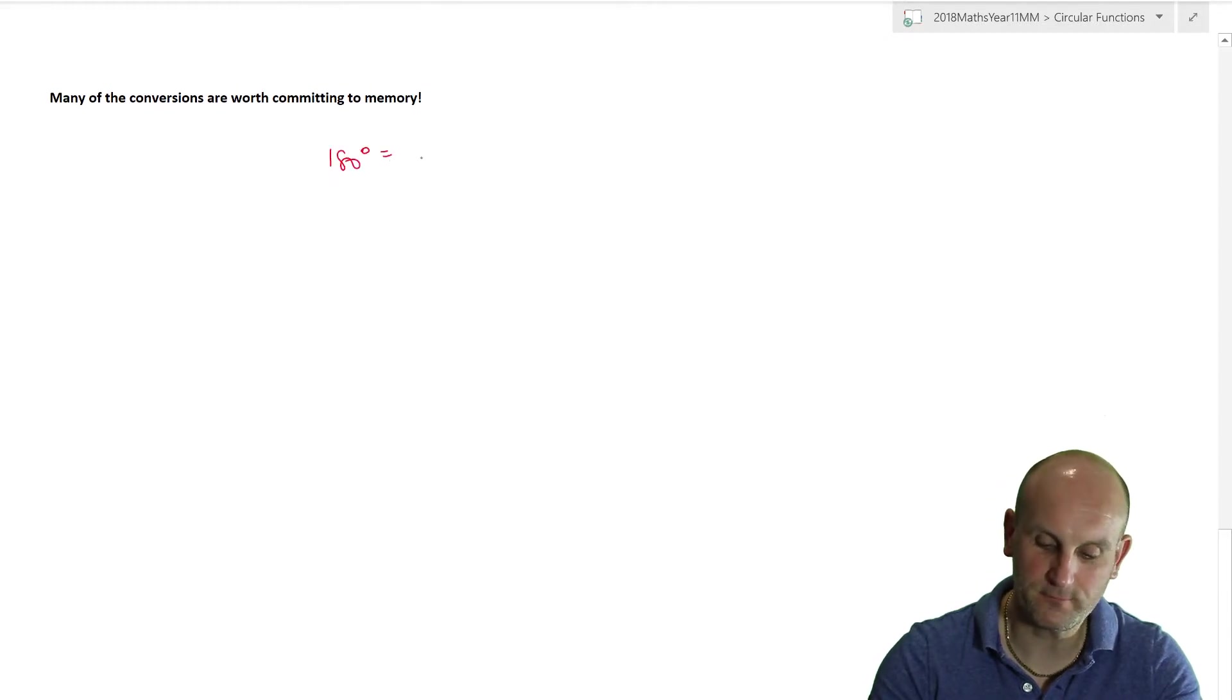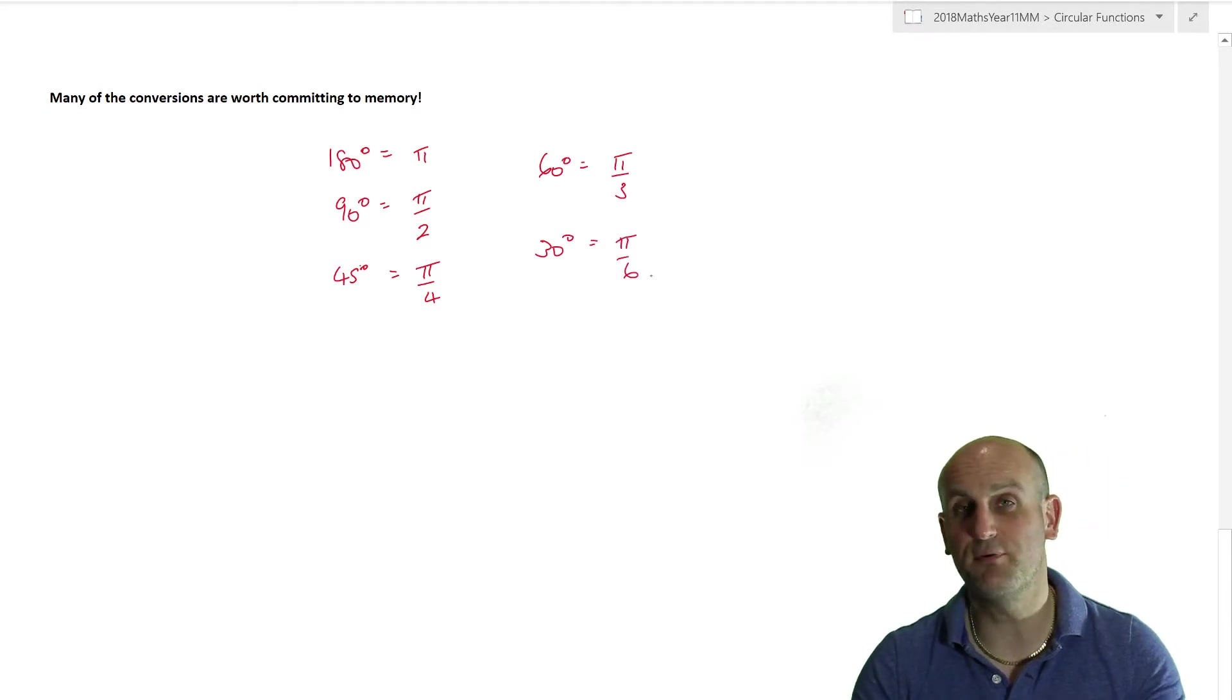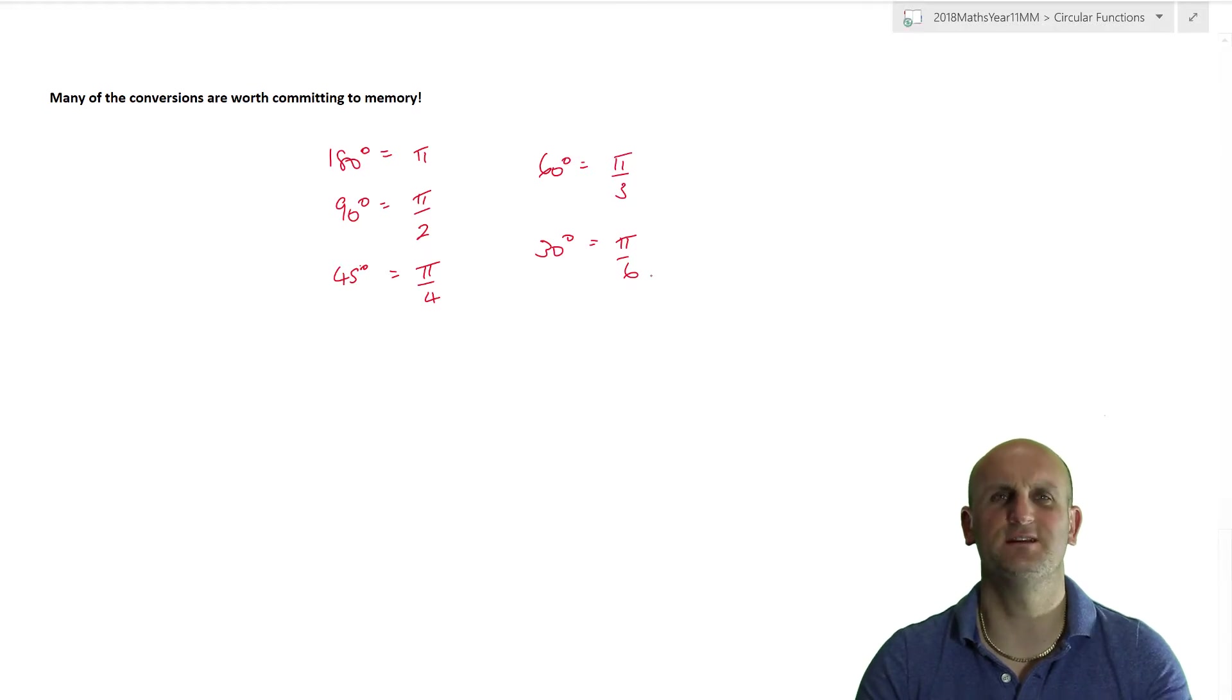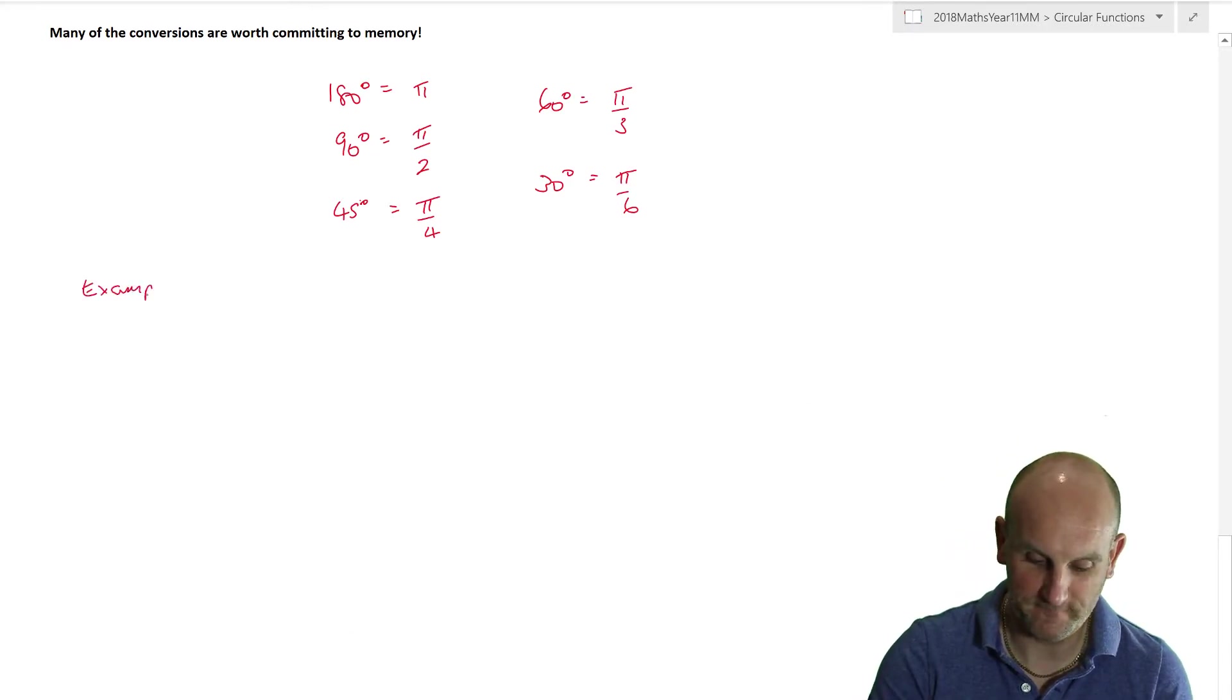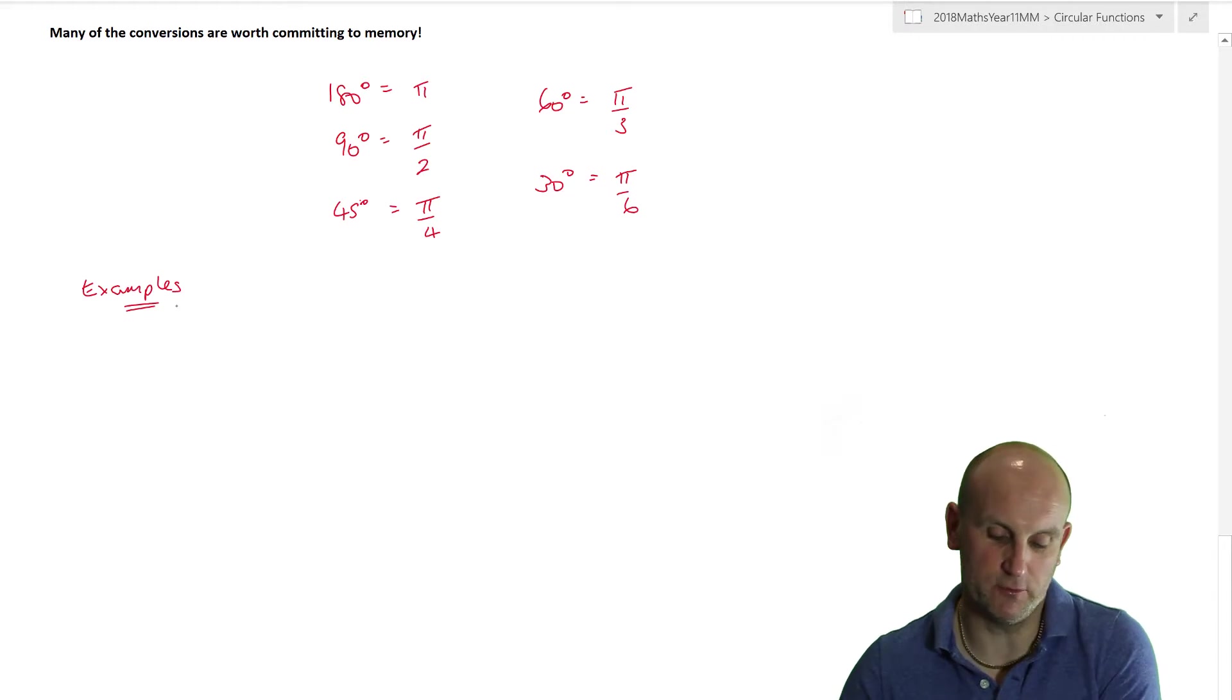And they actually pretty much are all of the ones that you need to remember. So which are they? So 180 degrees is equal to pi. 90 degrees is equal to pi on 2. 45 degrees is pi on 4. 60 degrees is pi on 3. And 30 degrees is pi on 6. Now using those, I can pretty much find anything else I need. Now you're going to say, well, where's 360 degrees? It's rare that we use 360 degrees. But now using these, I can pretty much convert anything to anything. And you're going to say, what do you mean? Well, here's some examples.